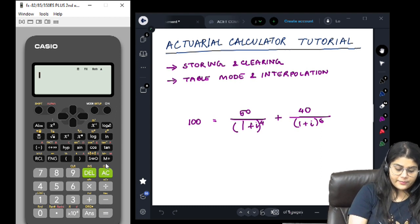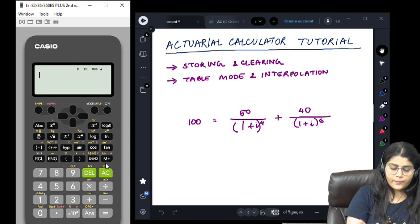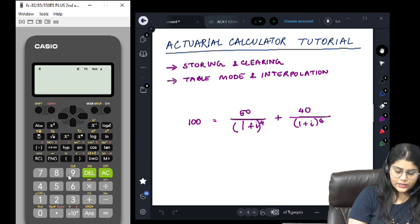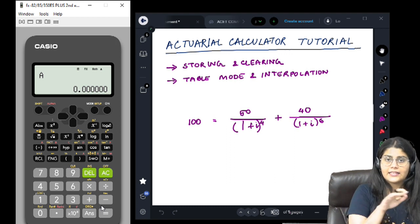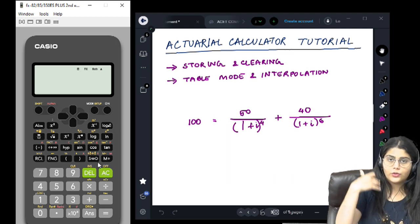This is about storing different values in your calculator. Now make sure that before you start your next operation, you clear your memory. Shift, 9, clear, memory. Now if I press A, I'm not getting anything because whatever I had stored in A has now been cleared. Now whatever new input I give, A will store that as its value.